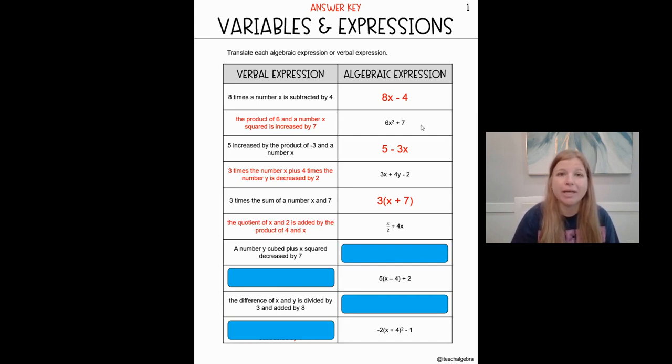Next one. A number y cubed. Oh, cubed. Well, squared we know means the second power. Cubed means what power? 3. Good job. Because a cube is length times width times height. There's three values to a cube, whereas a square is just length times width, right? So that's why squared is the second power, and cubed is the third power.